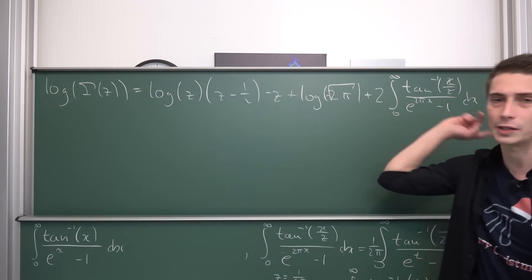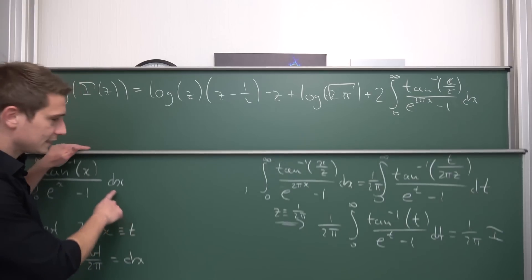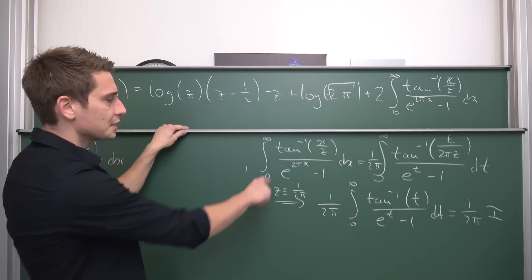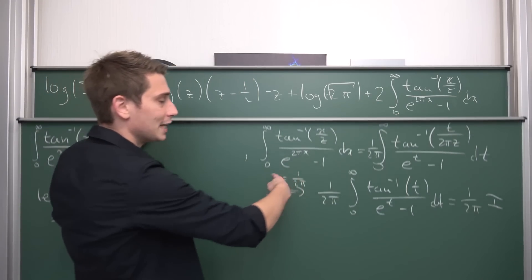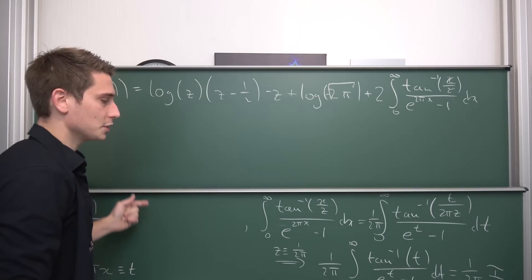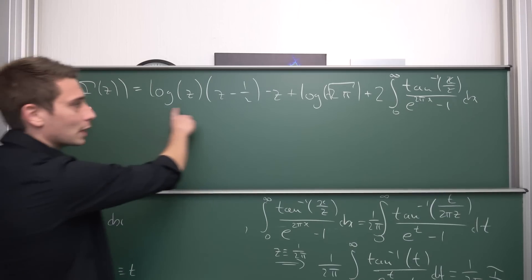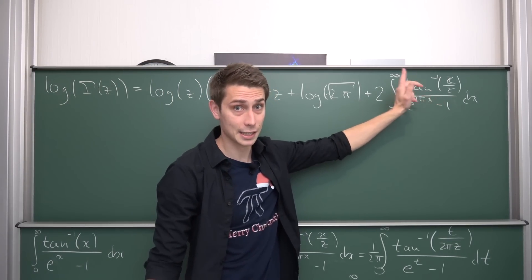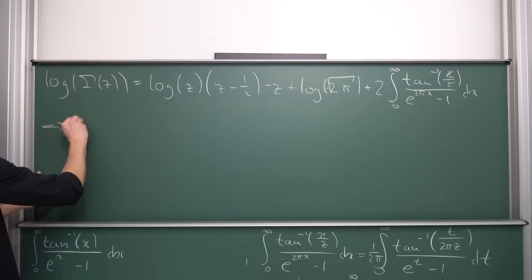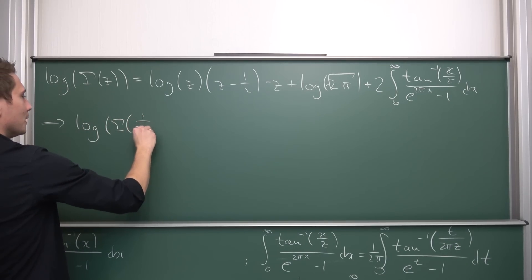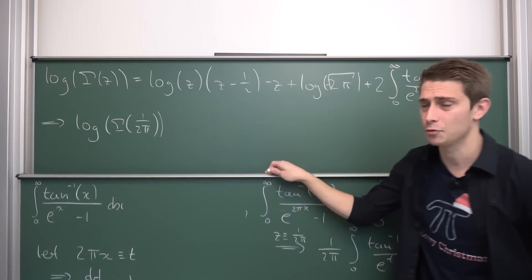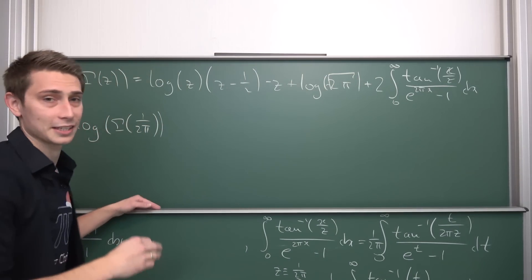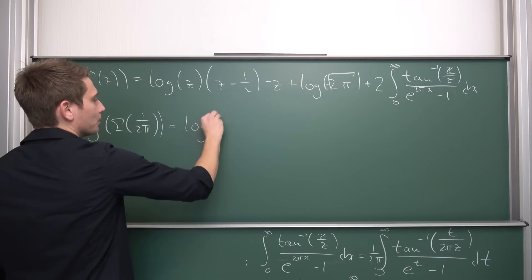It has log gamma in it, and this is what it yields. You might notice why I approached this integral using this one: because this is exactly the integral appearing here. The similarities are clear — this integral is exactly this one. Now we are going to make use of our manipulations and plug the new value in, under the condition that z equals 1 over 2π, which we plug into each and every z. Plugging 1 over 2π into every z, we get 1 over 2π out as a factor on the right-hand side, and we are left with the logarithm of gamma of 1 over 2π.